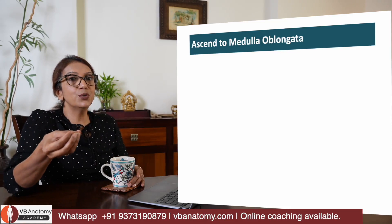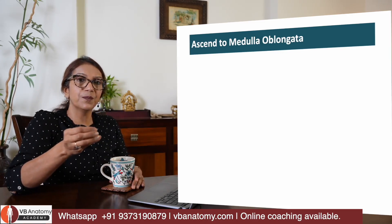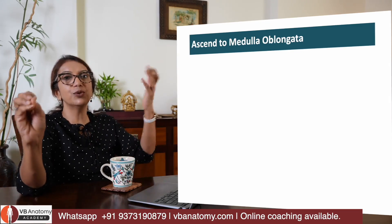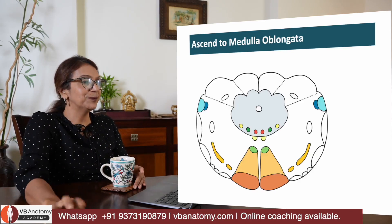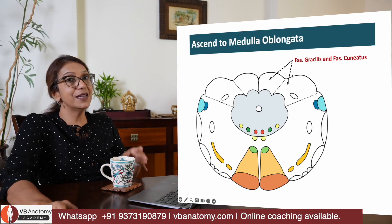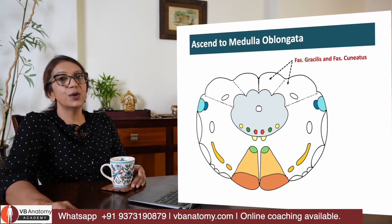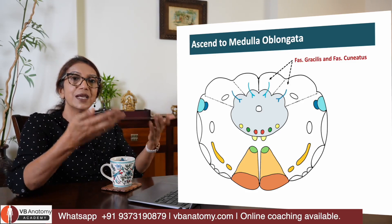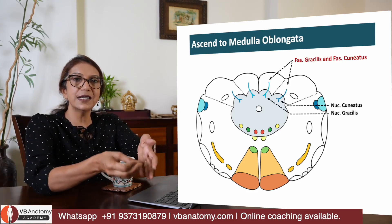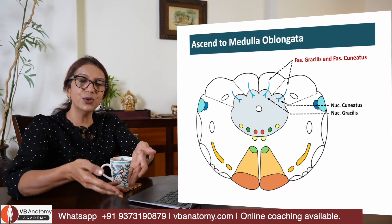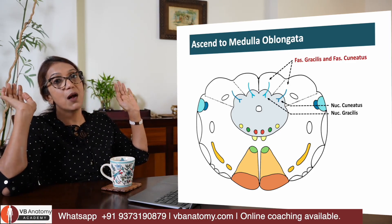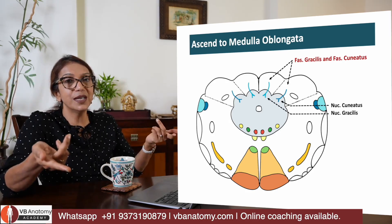Has there been a change of neuron yet? No — it is the same neuron that picked up the sensation all the way up to the lower medulla. In the lower medulla, the fasciculus gracilis relays into nucleus gracilis and fasciculus cuneatus relays into nucleus cuneatus. Once that relay is done, the job of the first order neuron is over, and the second order neuron begins.